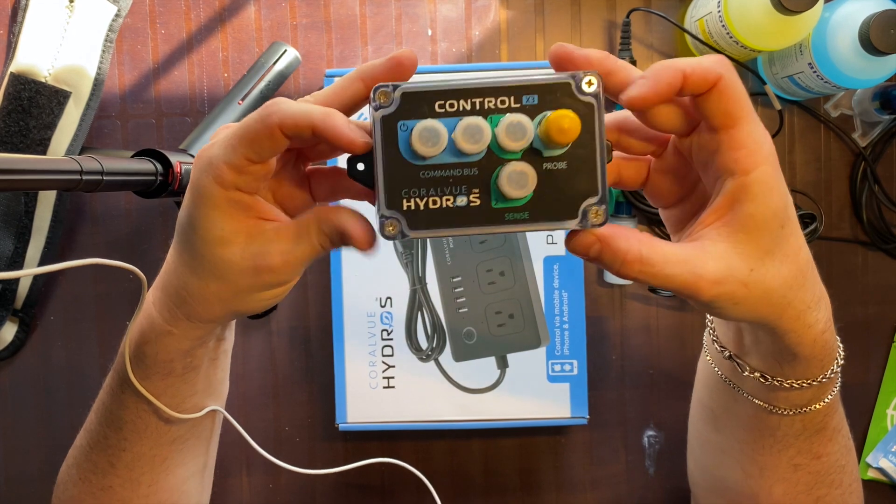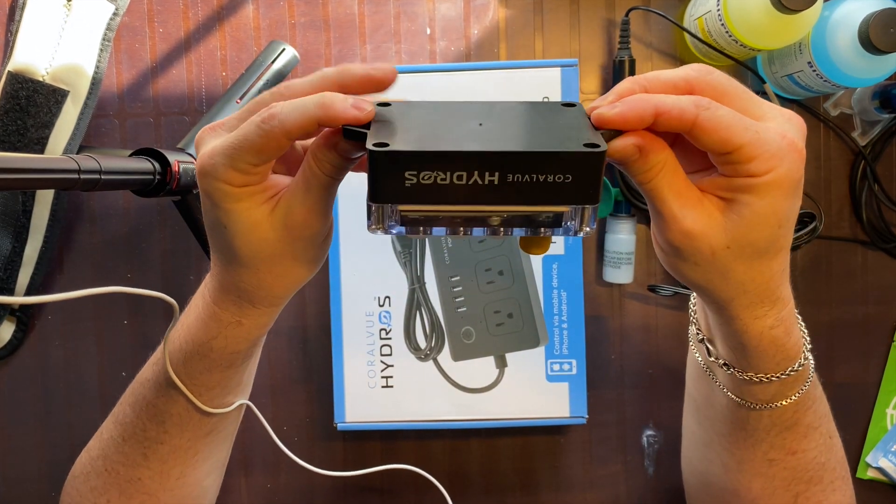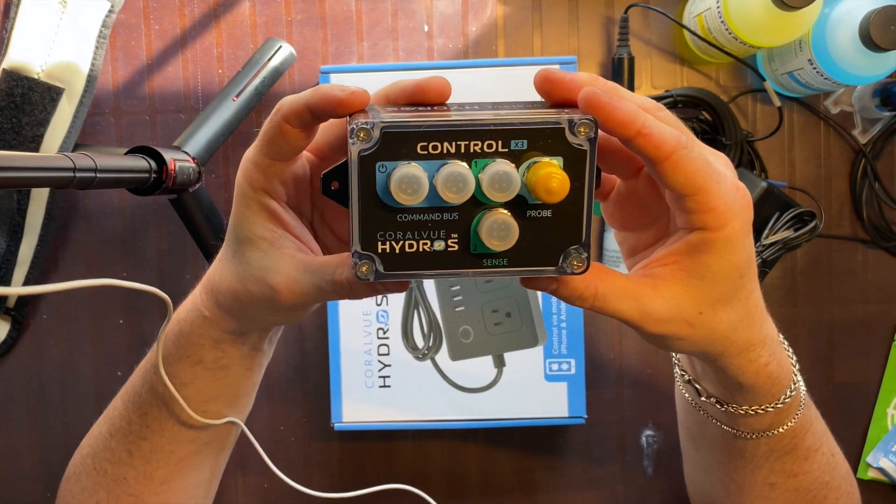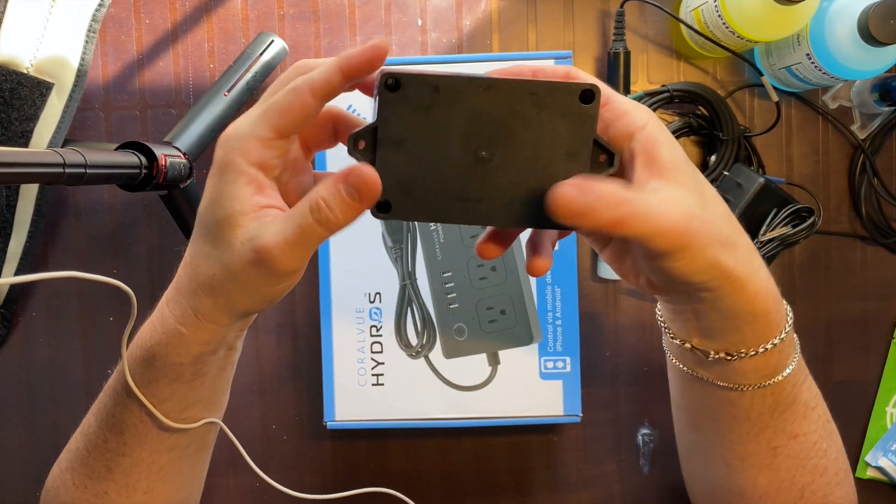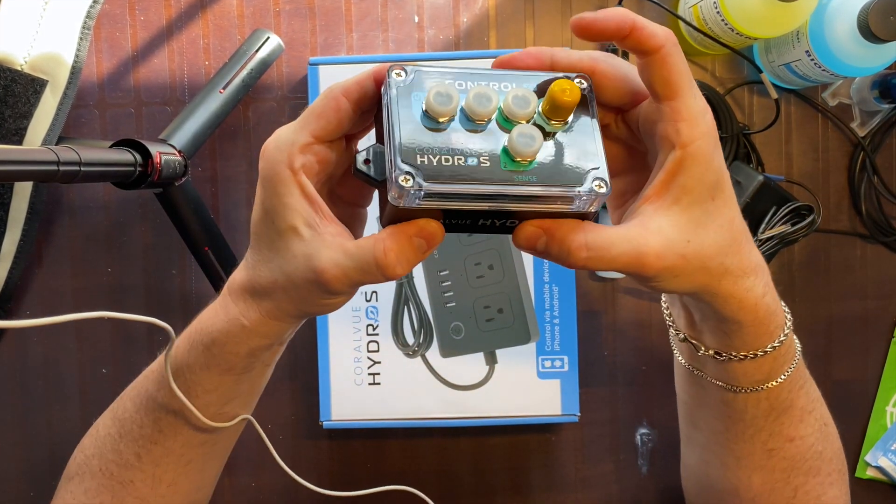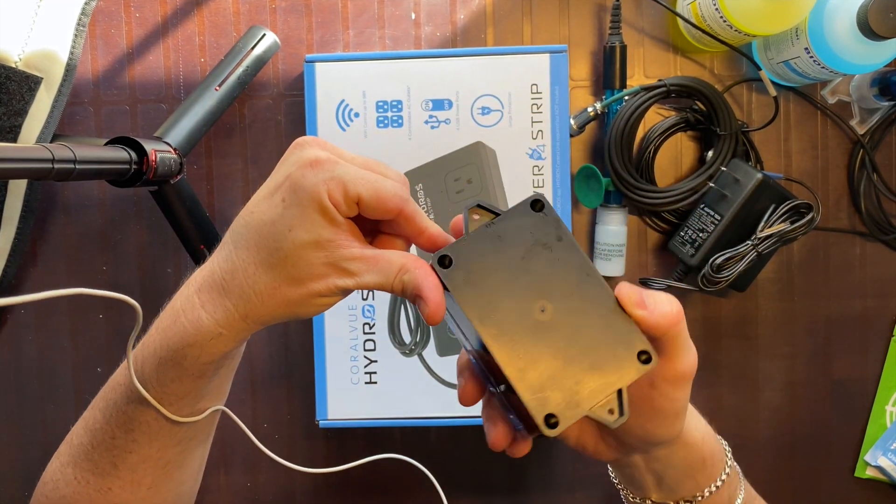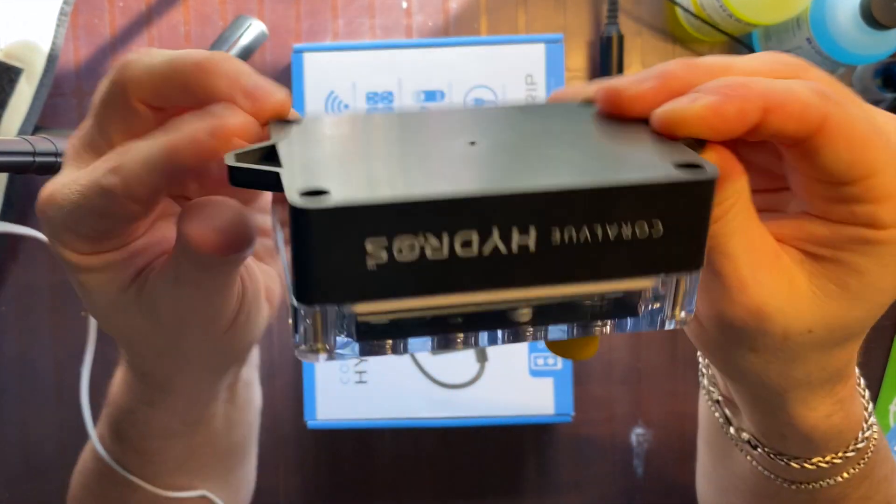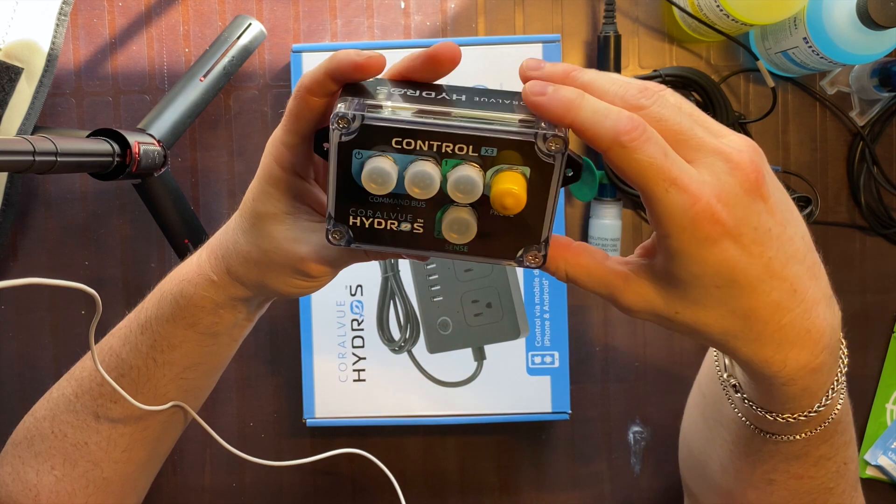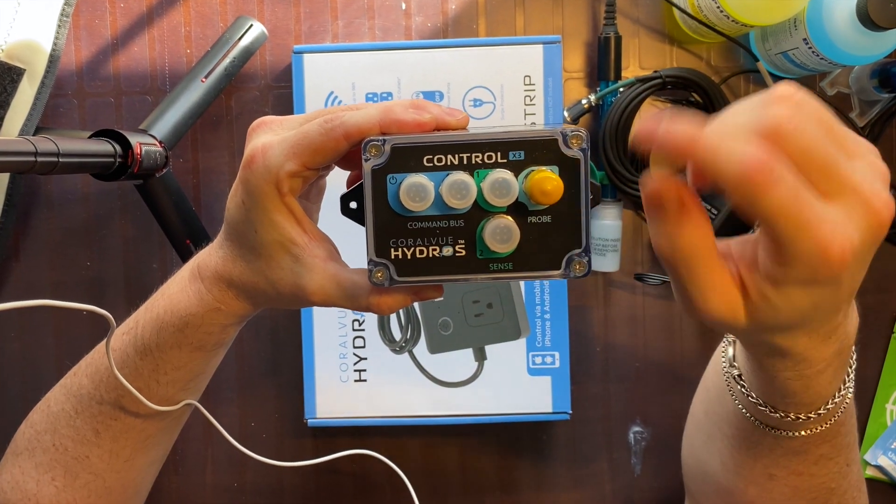This is the actual controller. Smaller than I anticipated. Feels like it's well-made hard plastic of some sorts. It has two screw holes here to attach it to something. Covers, otherwise pretty self-explanatory.